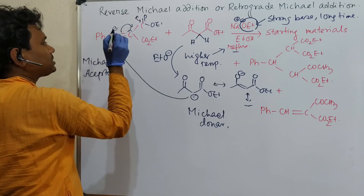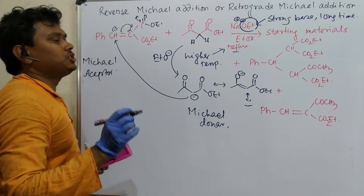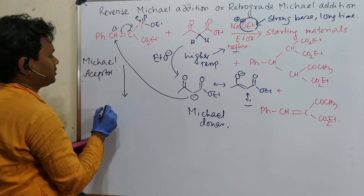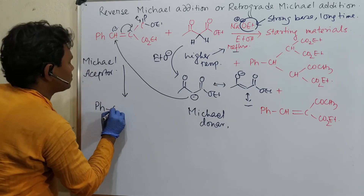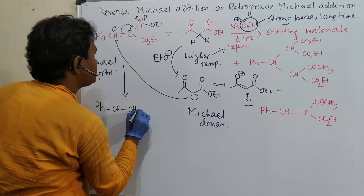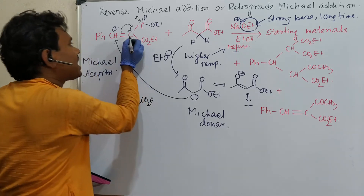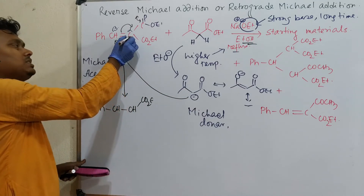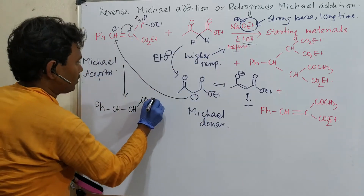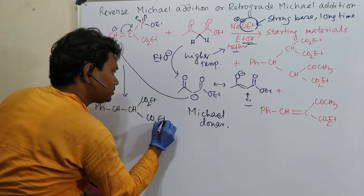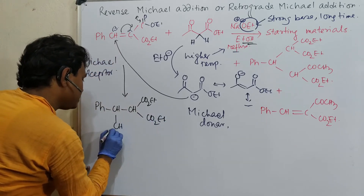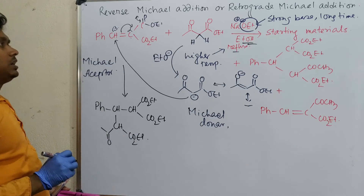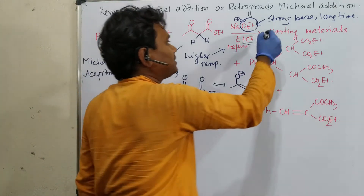The charge comes back here through the addition. I discussed the basic concept of Michael addition in a previous video — please visit that if needed. Skipping some steps: a carbanion is generated at this carbon position (CH, CO₂Et). Since there is ethanol in the solvent, this carbanion abstracts a proton from ethanol, giving CH with CO₂Et groups. So after some reaction time, there will be some starting material present.